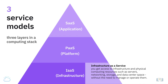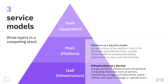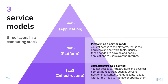In an Infrastructure as a Service model, you get access to infrastructure and physical computing resources such as servers, networking, storage, and data center space without the need to manage or operate them. In a Platform as a Service model, you get access to the platform — that is, hardware and software tools — usually those needed to develop and deploy applications to users over the internet.